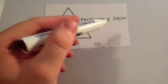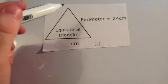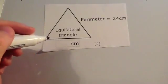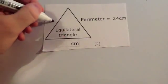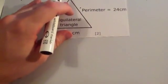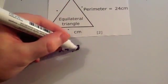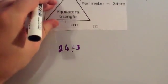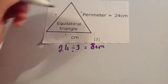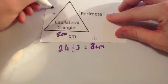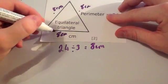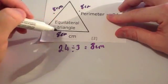For this question, we've been told that the perimeter of the equilateral triangle is twenty-four centimetres. That means when you add together the three sides, the answer is twenty-four. Because it's an equilateral triangle, all the sides are the same. So to find one side, you do twenty-four divided by three — because all of the sides are equal — which equals eight centimetres. Let's check: eight plus eight is sixteen, plus eight is twenty-four. So each side of this triangle is eight centimetres.